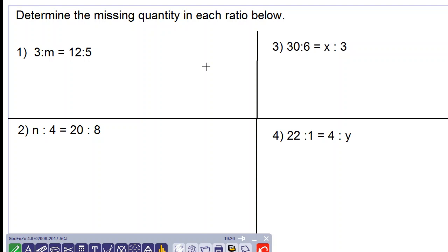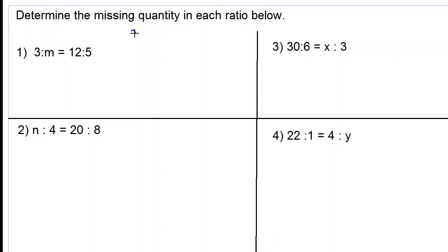Today we are asked to determine the missing quantity in each ratio. Number one, we rewrite this as a fraction, so 3 to m would be 3 over m is equal to 12 over 5.